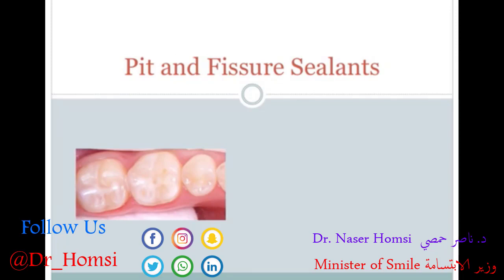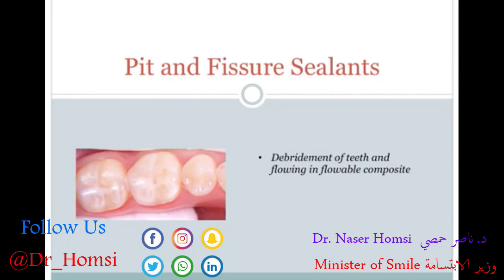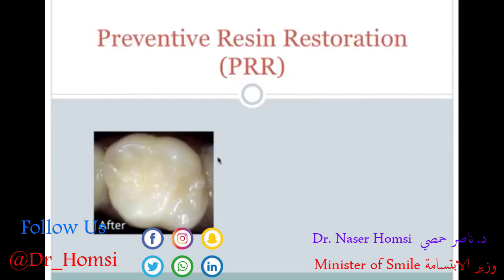Pit and fissure sealants are also a very conservative approach and commonly performed. Since these are hard areas to clean, instead of removing enamel, you can opt to etch and flow a sealant material to smooth out pits and fissures. A pit is basically the failure of a fossa to coalesce, whereas fissures are the failure of grooves to coalesce during tooth formation.